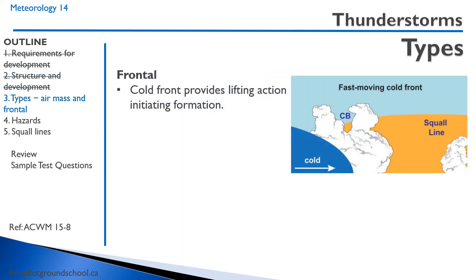There are six different types of thunderstorms, classified based on their lifting action. The first is the frontal thunderstorm. In a cold front, the cold air pushes itself under warm air, forcing the warm air upward as the cold front advances. This creates the instability and lifting action needed to form a thunderstorm.